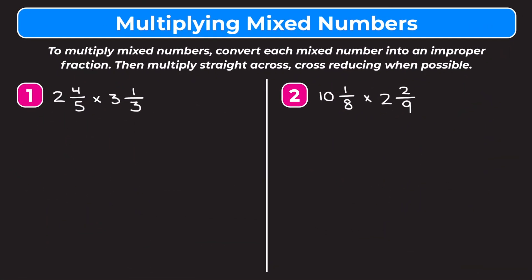In this video we're going to learn how to multiply mixed numbers. At the top of our screen it says to multiply mixed numbers, convert each mixed number into an improper fraction, then multiply straight across, cross reducing when possible. So basically we're going to change each mixed number into an improper fraction and then just multiply like we would a normal fraction.